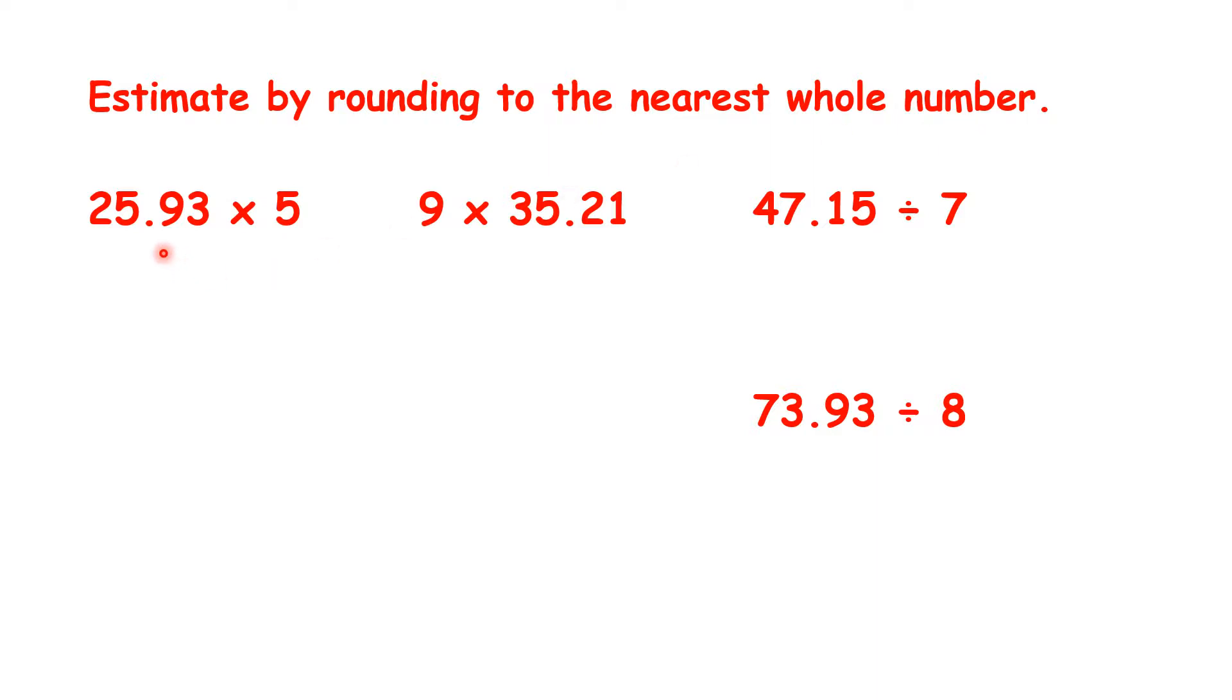First we have 25.93 times 5, but if we're rounding to the nearest whole number, because we have a 9 in our tenths, we need to round up, so we need to work out 26 times 5.